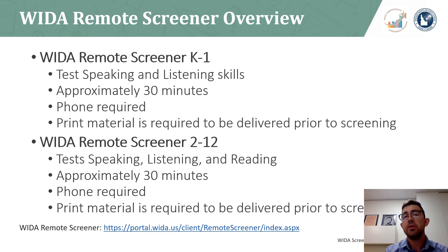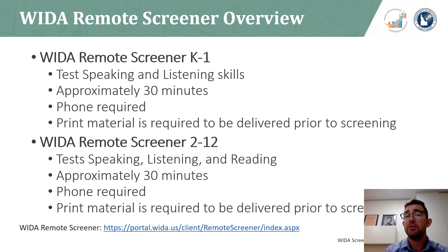There are two different WIDA Remote Screeners. One covers kindergarten through grade one, and the other is administered to provisional ELLs in grades two through twelve. The K through grade one remote screener only tests listening and speaking, while the grades two through twelve remote screener assesses speaking, listening, and reading skills. The WIDA Remote Screener is only a tool to pre-identify students for ELL services; it does not give an English proficiency score and is not comparable to the WIDA Screener or Kindergarten WAPT.